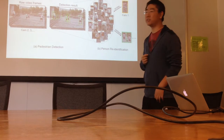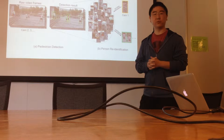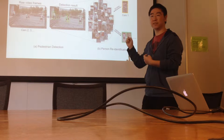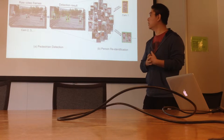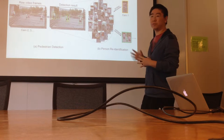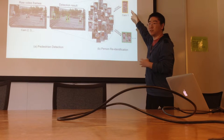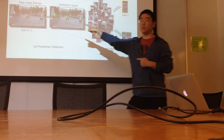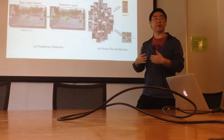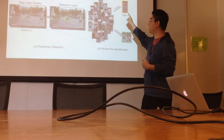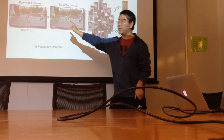First, an introduction to person re-identification — this may be a new task to you. It has only been a research topic for a couple of years. Basically, the input of this task is a query image: a person of interest we want to search for. The other input is raw video frames recorded by some cameras, and we want to determine if this person appears in those cameras.